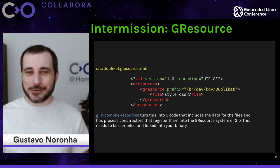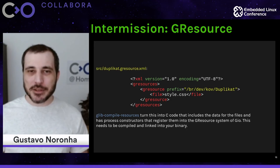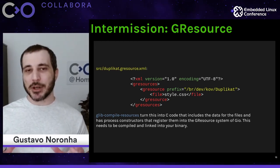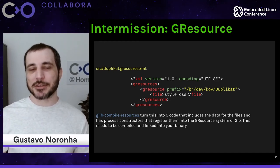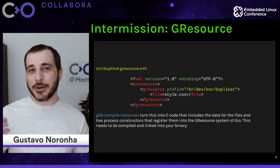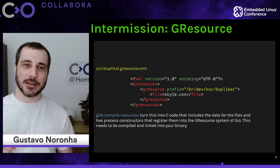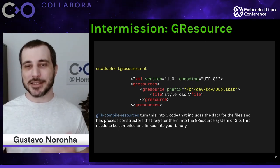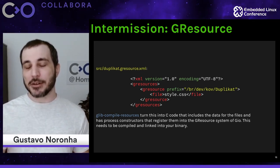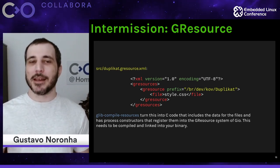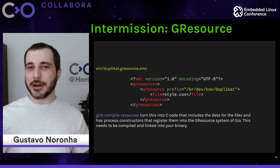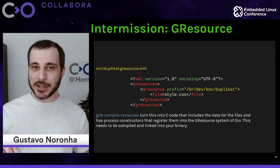Now let's talk about GResource. GResource is a neat functionality provided by Gnome's GIO library. It gives applications a simple and powerful interface to load data files from various sources — either out of the file system, or, most interestingly, embedded directly into your binary, making it much more portable and less reliant on installation paths. The way it works is you write an XML description of the files you want to embed, and during the build it runs the glib-compile-resources binary to generate a C file, which is then built and linked into your application.